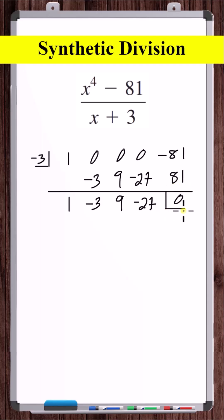So the remainder is zero. This box indicates the remainder. And these are the coefficients of the quotient where the order of the quotient is one less than the order of the dividend. So the final answer is zero.